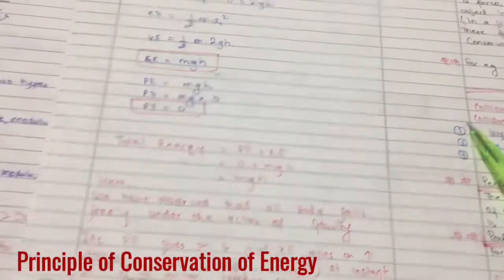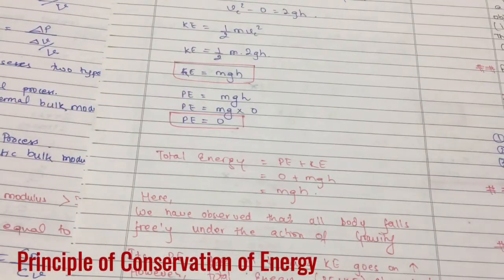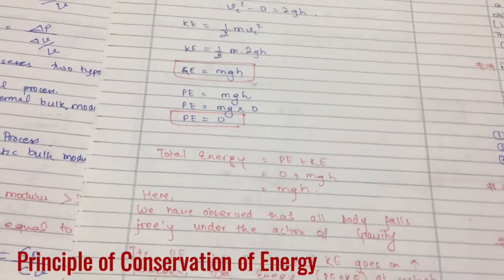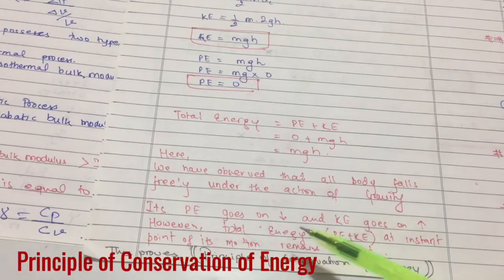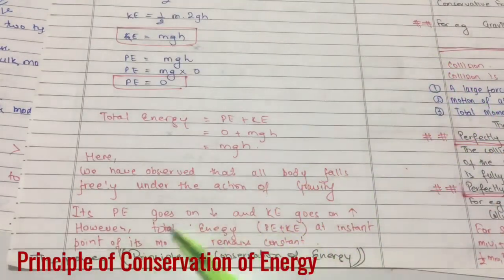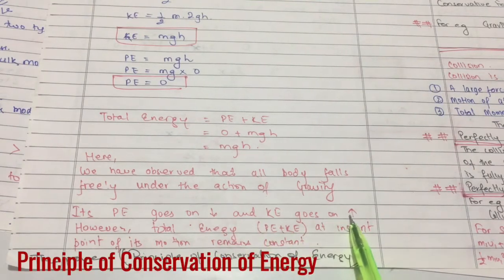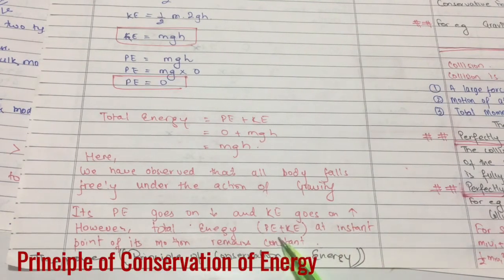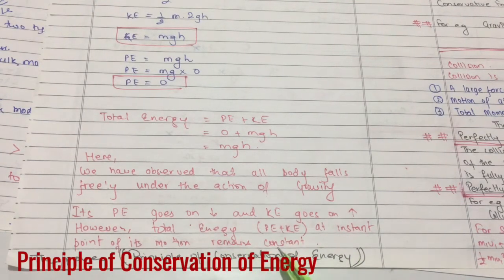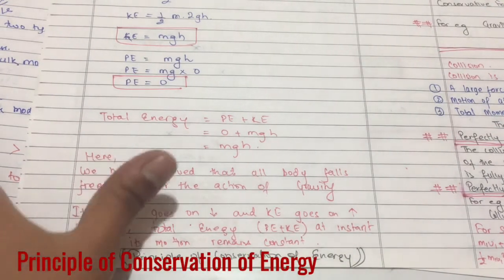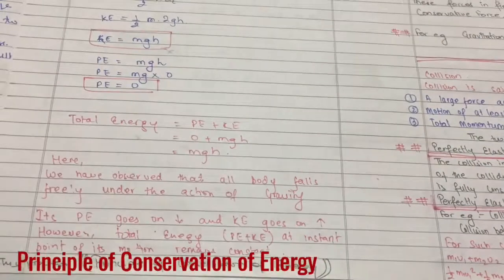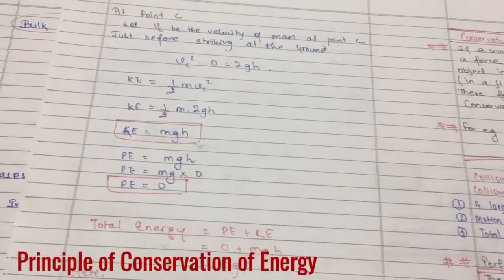What do we get at point A, point B, and point C? We got that all the values are mgh. So here we have observed that as the body falls freely under gravity, its potential energy goes on decreasing and kinetic energy goes on increasing. However, the total energy, potential energy plus kinetic energy, at any point of its motion remains constant. This proves the principle of conservation of energy.